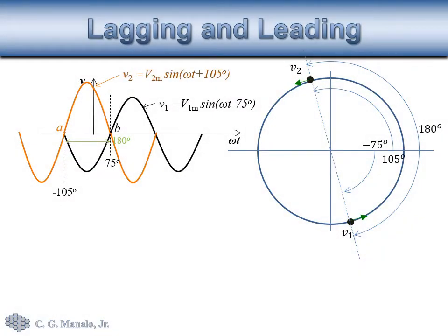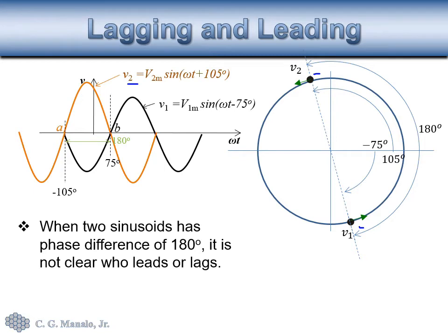Another scenario: we move V2 again while V1 is maintained. We notice that their distance around the circular racetrack is 180 degrees. In this scenario it's not clear which is actually leading or lagging, so we say it is not clear which sinusoid is leading or lagging the other.